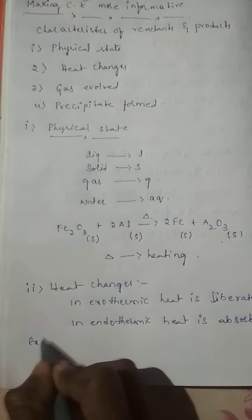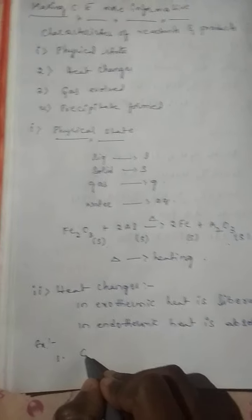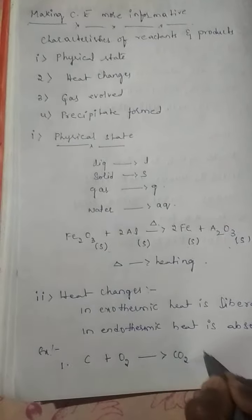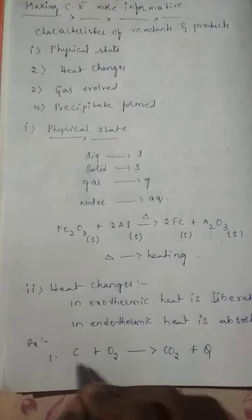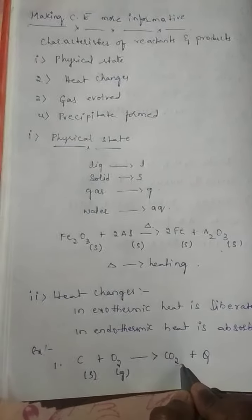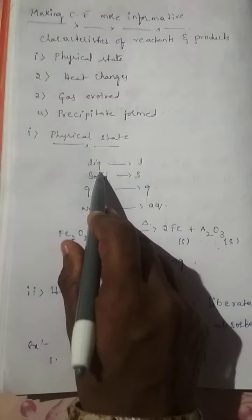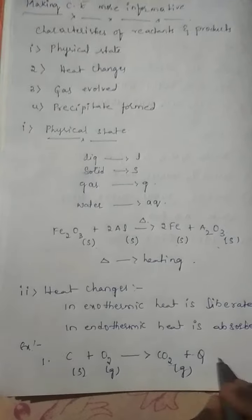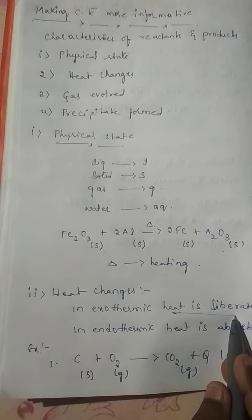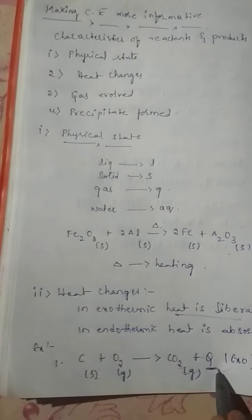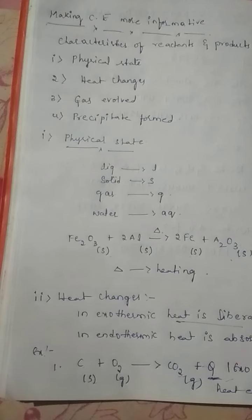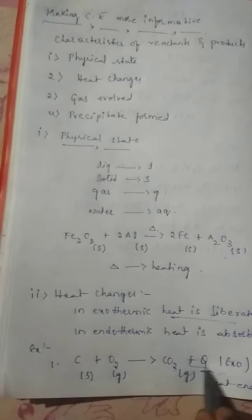We will see some examples. In this first one, carbon plus oxygen gives rise to carbon dioxide plus Q. Here carbon is a solid, oxygen is a gas, carbon dioxide is a gas. This is expressing physical state. Now plus Q is nothing but exothermic reaction. Means what is liberated? Heat is liberated. Here Q is heat energy. For exothermic reactions, plus Q we will write.